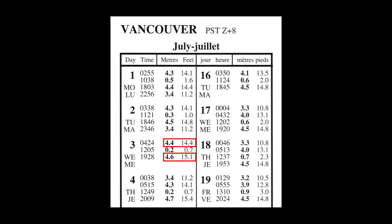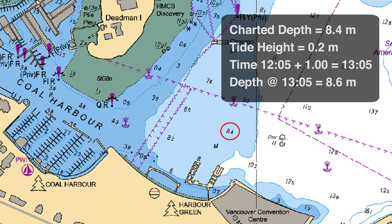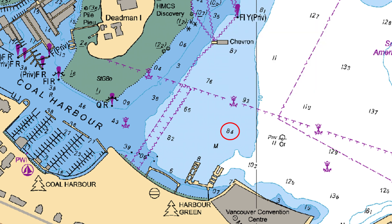Even though this is quite a low number, it is still added to the charted depth. So in this example, this spot in Vancouver Harbour would actually be 8.6 meters deep at 13:05, when we account for the hour of daylight savings.